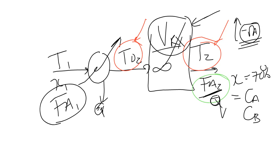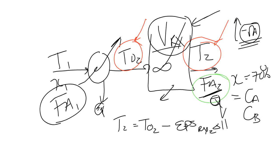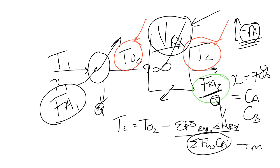Be very careful with the energy balance for reactor 2. It is: T2 equals T-naught-2 minus epsilon-over-reactor-2 times ΔH_reaction divided by the sum of the heat capacity terms. You can still use the total energy-carrying capacity that enters, since ΔCp of the reaction is zero.